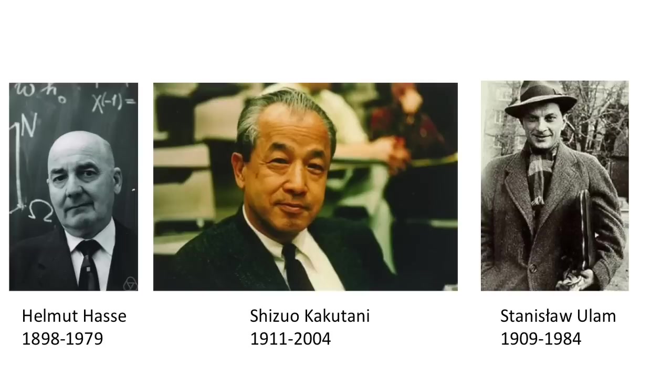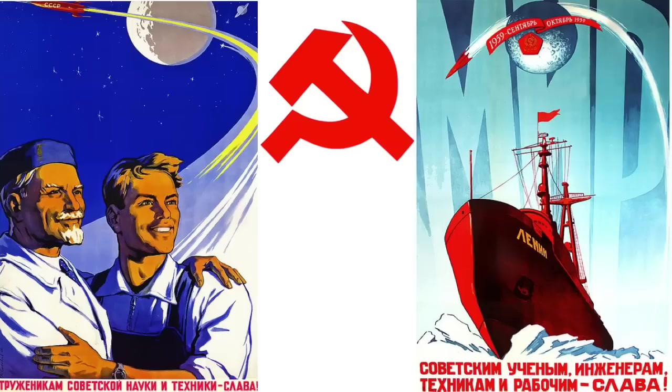With all this interest, it was joked in 1960 that the 3x plus 1 problem was part of a conspiracy to slow down mathematical research in the U.S.